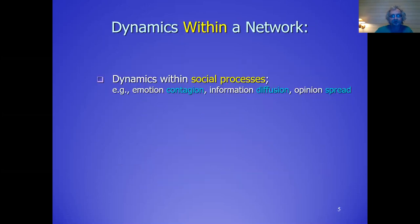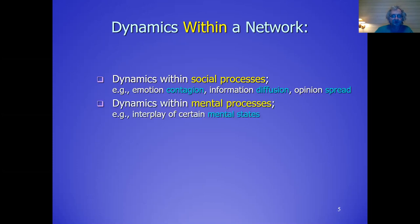You can use these networks for different forms of dynamics. For example, dynamics in social processes, like emotion contagion, or information diffusion, or opinion spread. But you can also use them to model mental processes, like an interplay of certain mental states — how beliefs influence your intentions, and also emotions, for example. So these networks give a really wide applicability.